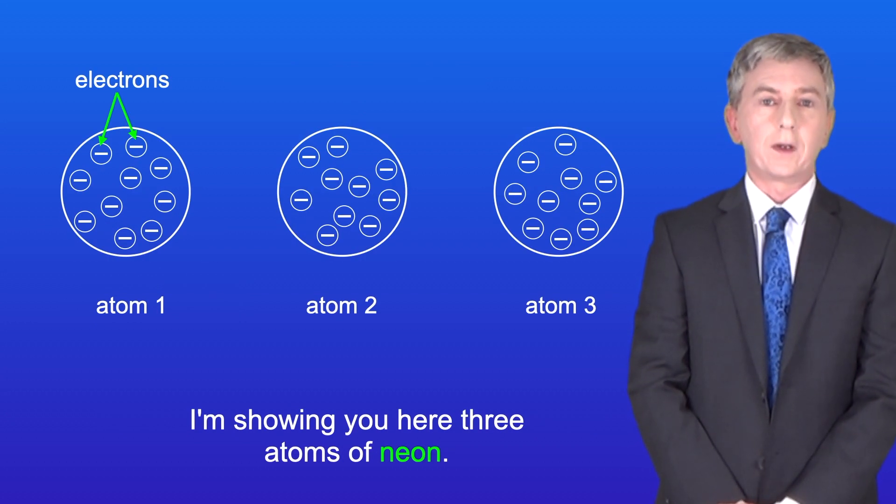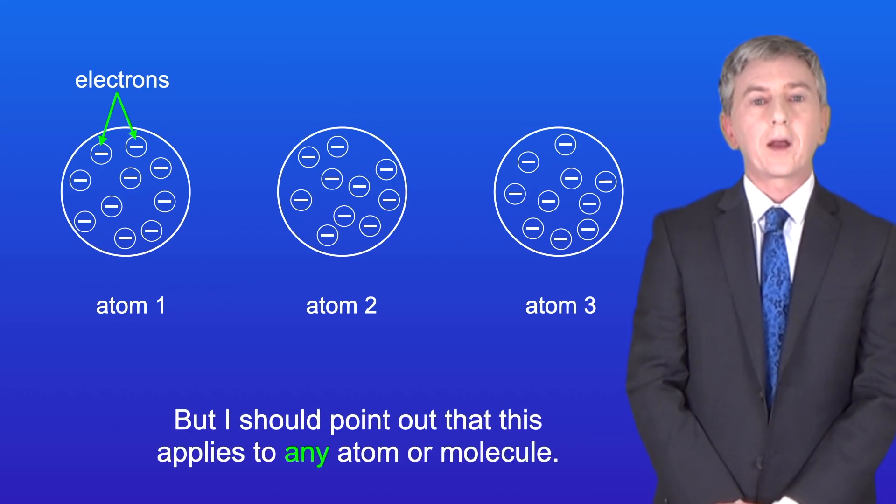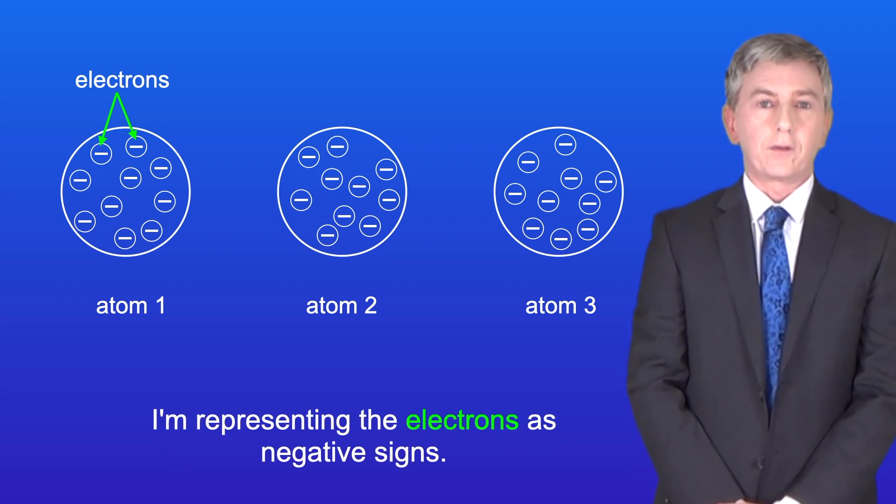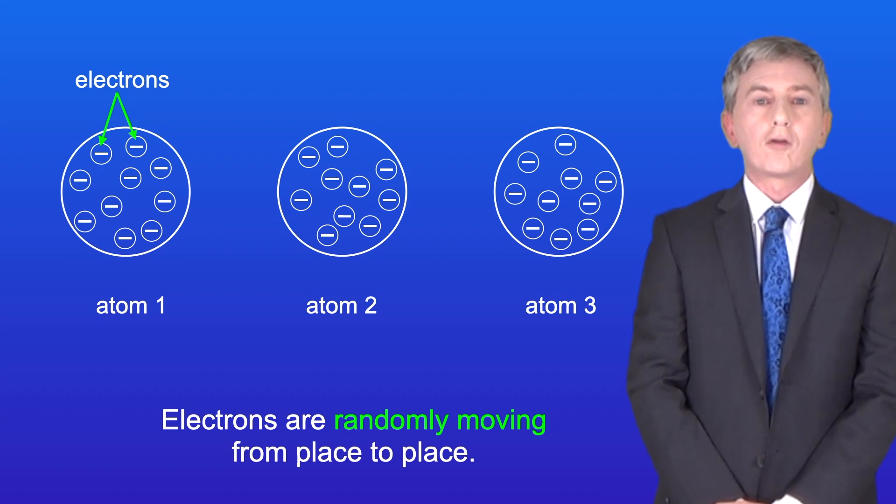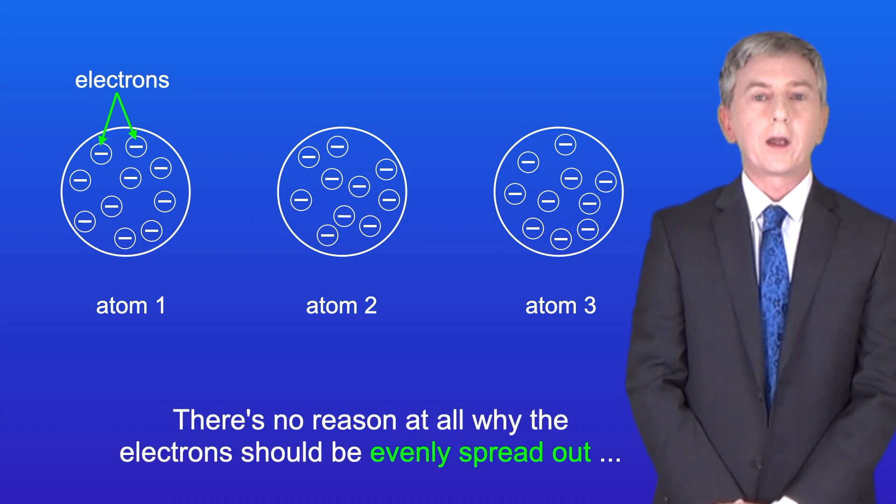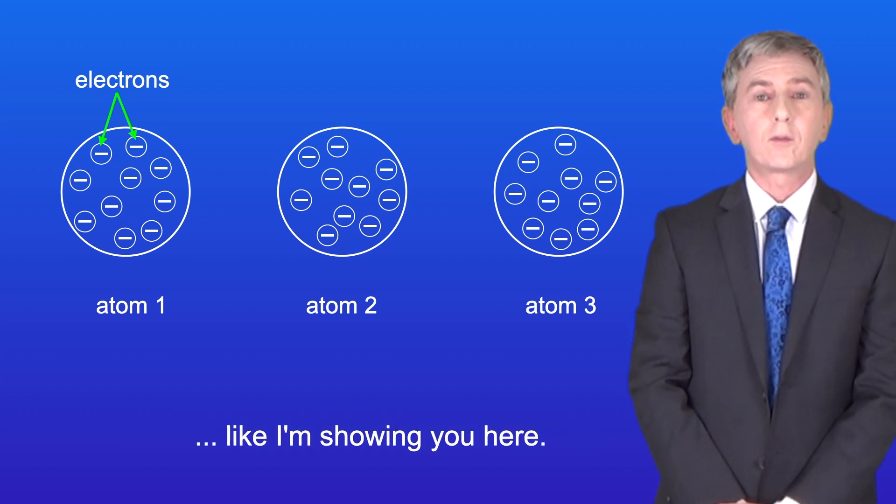I'm showing you here three atoms of neon, but I should point out that this applies to any atom or molecule. I'm representing the electrons as negative signs. Now electrons are randomly moving from place to place, and there's no reason at all why the electrons should be evenly spread out like I'm showing you here.